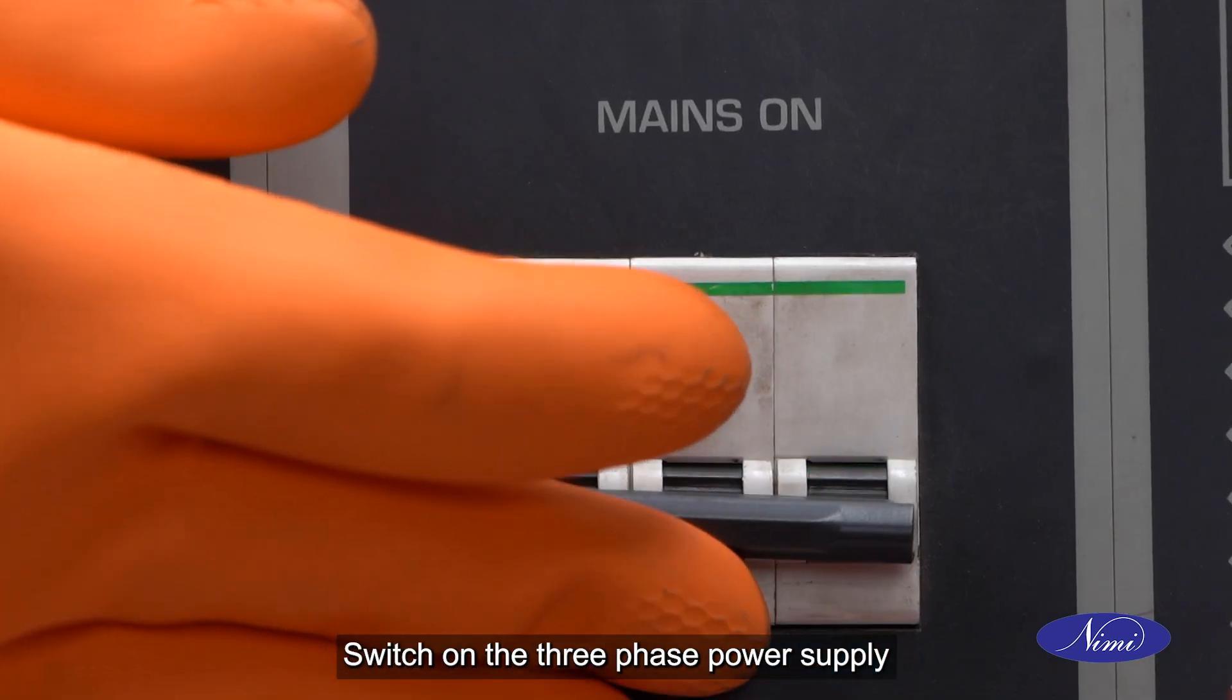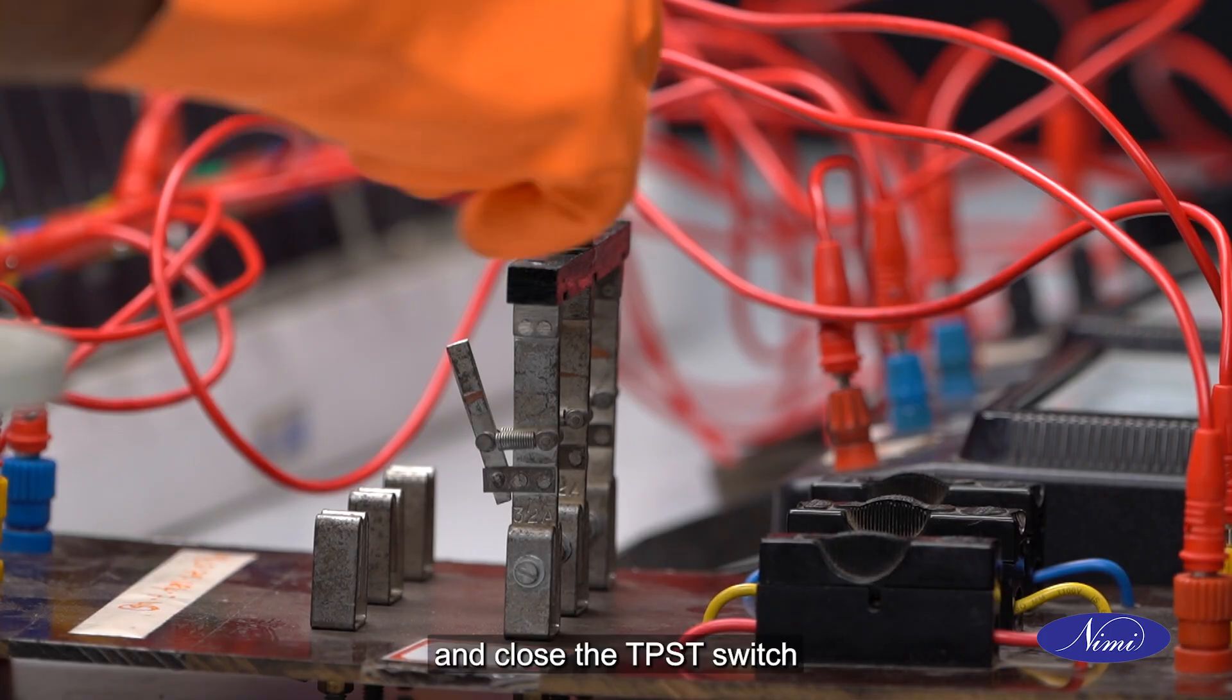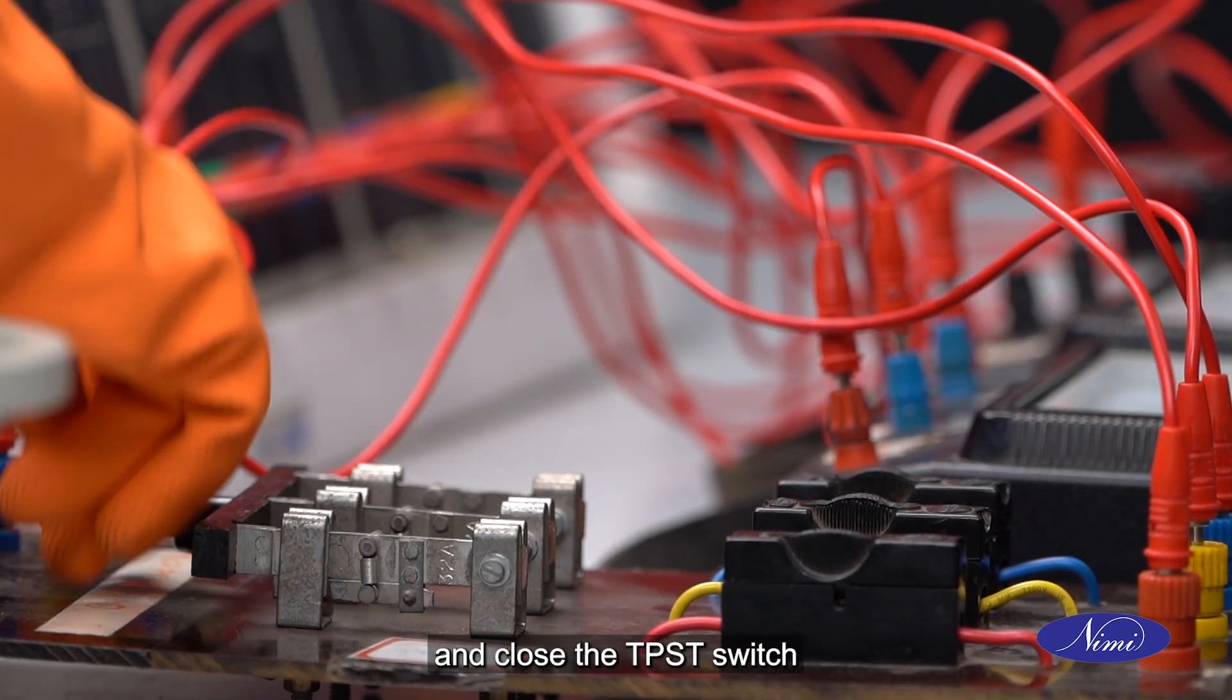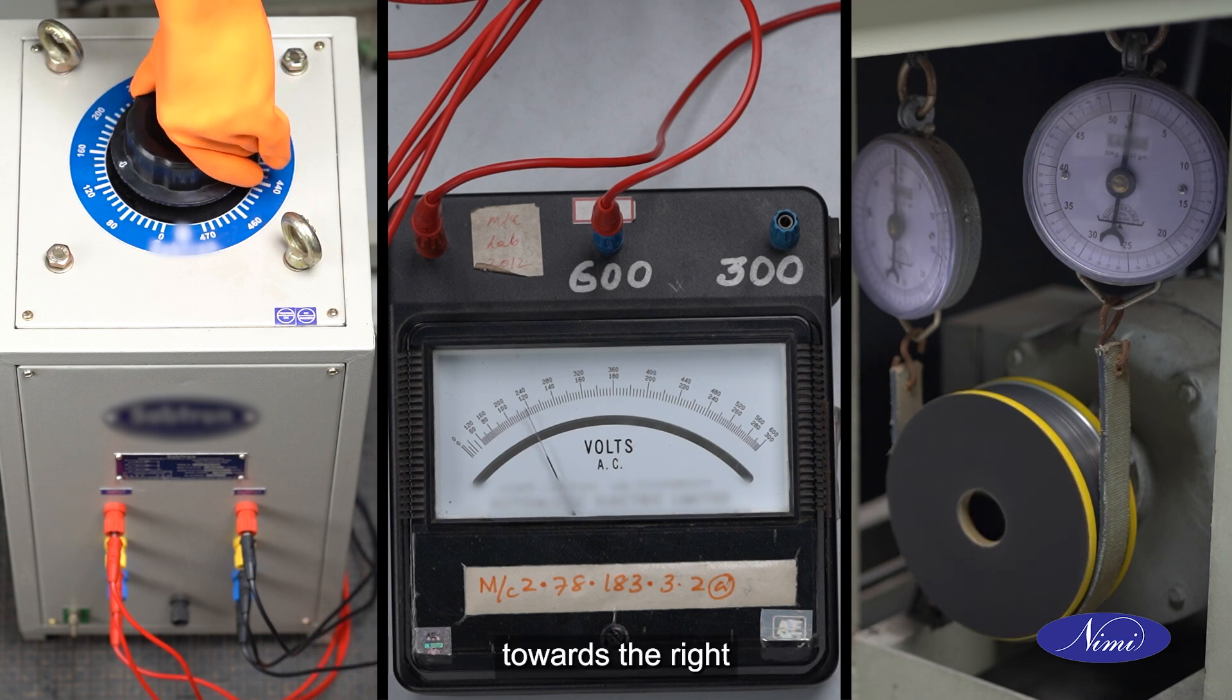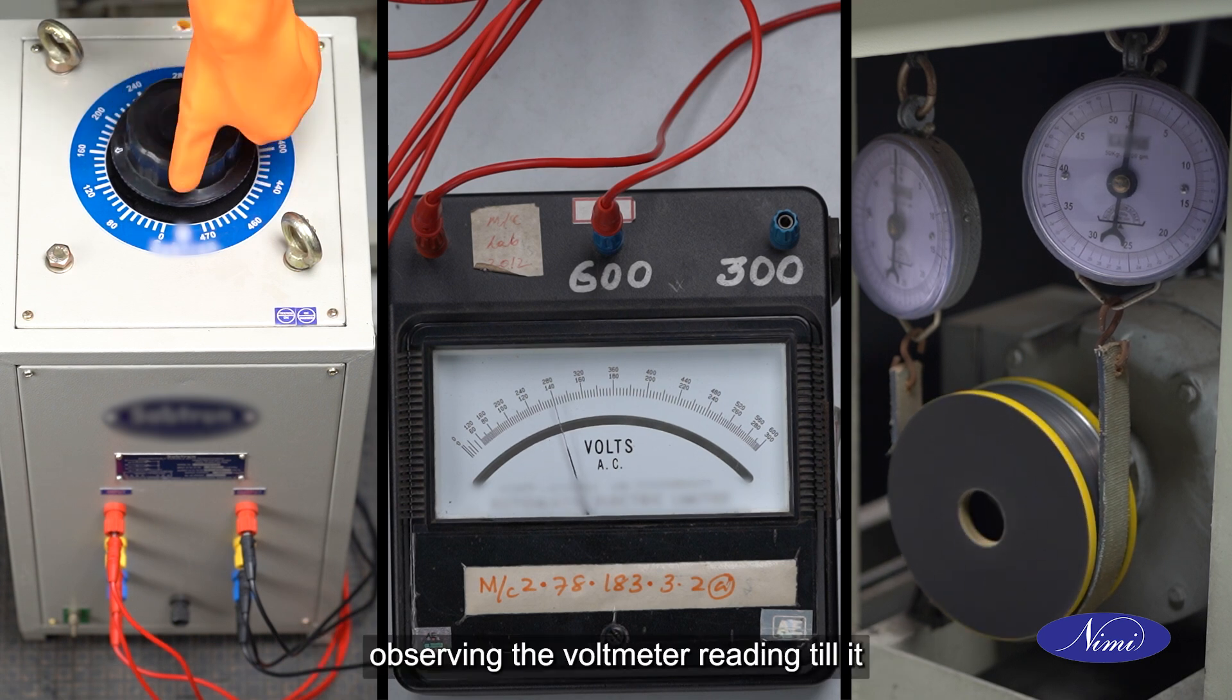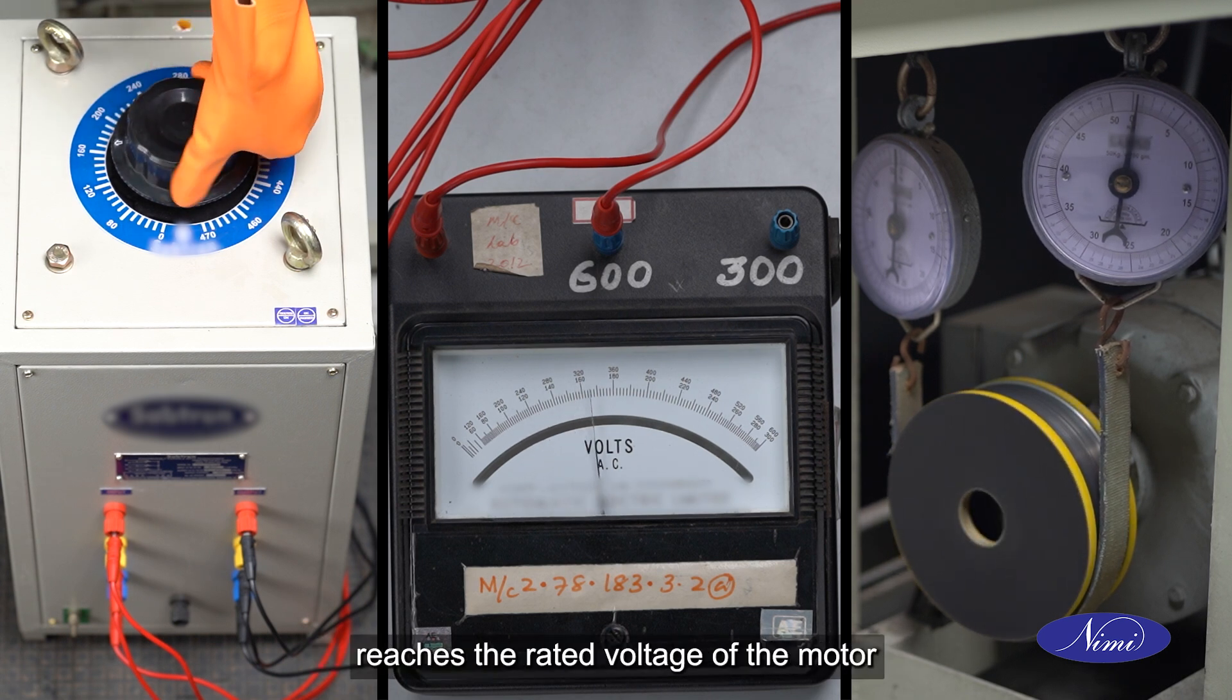Switch on the 3-phase power supply and close the TPST switch. Slowly turn the knob of the auto transformer towards the right, observing the voltmeter reading till it reaches the rated voltage of the motor.